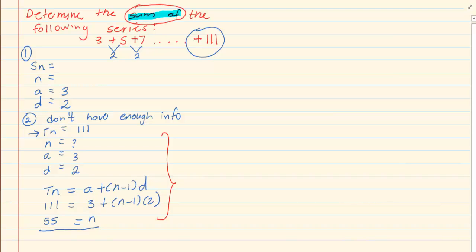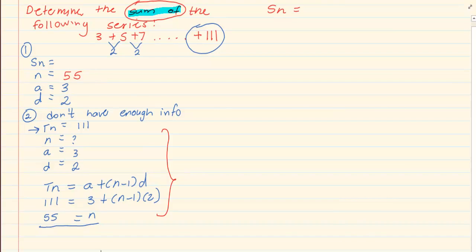Remember this was not answering the question. This simply gave us n but it didn't help us get the sum of the series. So now we take the n we have and we substitute it into our S_n, n, a, and d where we started in the beginning. We have now 3 out of 4: n is equal to 55.